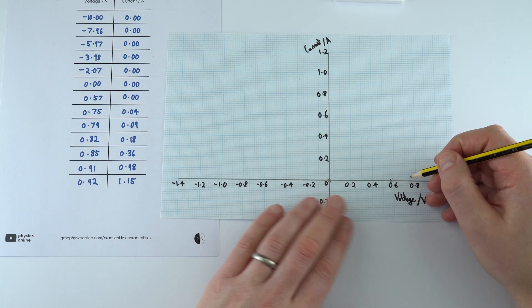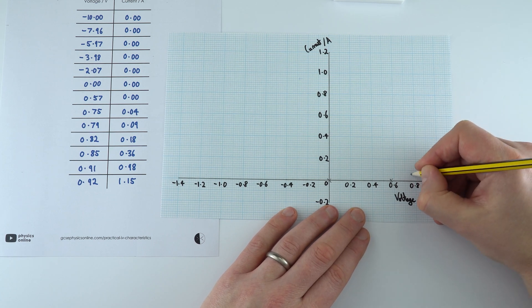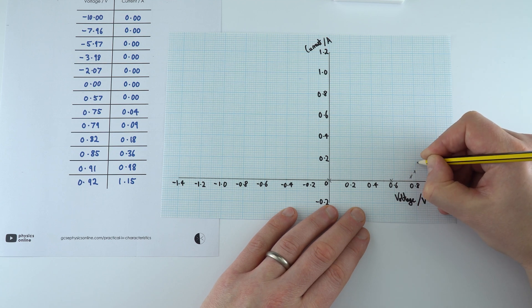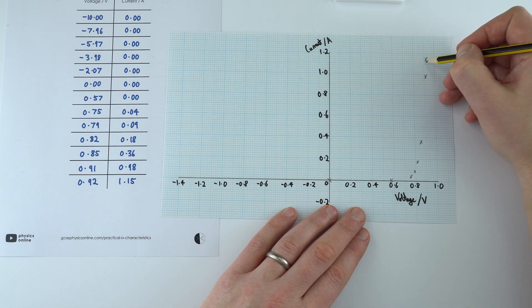When we go to 0.75 which is here, we've got a value of 0.04, and then it starts to rise rapidly. And this final point here was when it actually overheated.